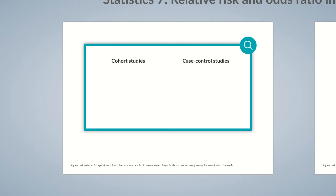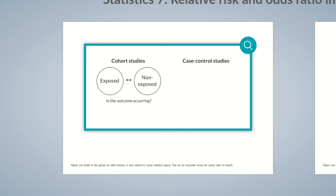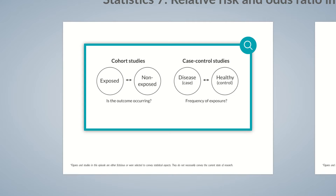Cohort studies compare groups of exposed and non-exposed individuals. Both groups are followed over time to determine whether a particular outcome, for example a specific disease, develops. In contrast, case-control studies recruit patients with a disease or outcome of interest. These cases are compared with a set of unaffected healthy individuals termed controls. Case-control studies compare the frequency of exposure in both groups. Therefore, the decisive difference is that cohort studies compare exposed and non-exposed individuals, whereas case-control studies compare groups with and without the disease.